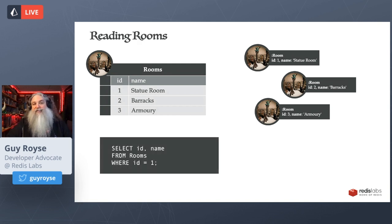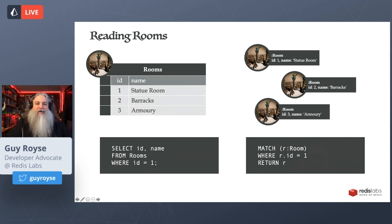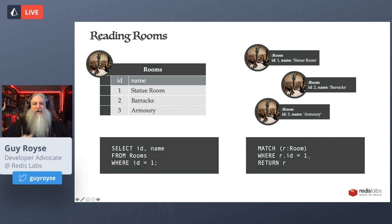To read that back from SQL, we do a simple SELECT — the first thing you learn in SQL. To do it in Cypher we use the MATCH keyword. This is a matcher — just matching a single node, assigning it to R, then filtering with a WHERE clause just like SQL, saying where the ID is one. So: match all nodes with the label room, filter to give me just the one where the ID is one, then return it.